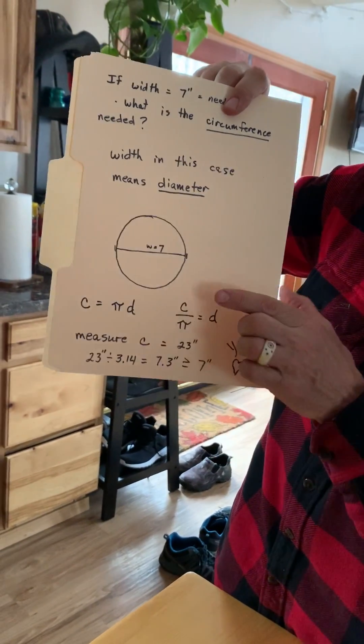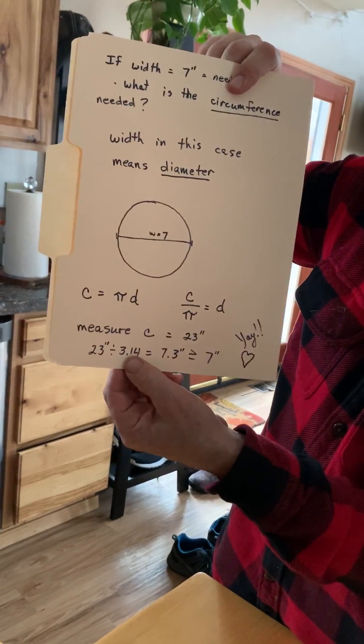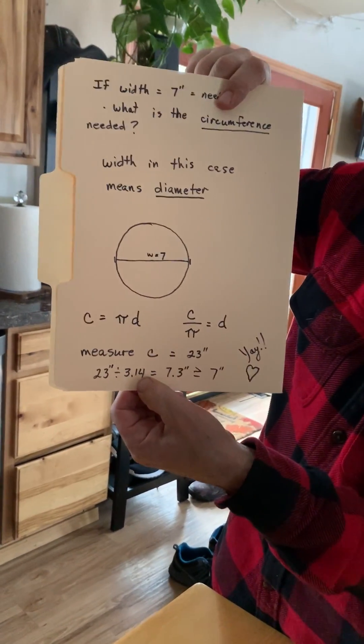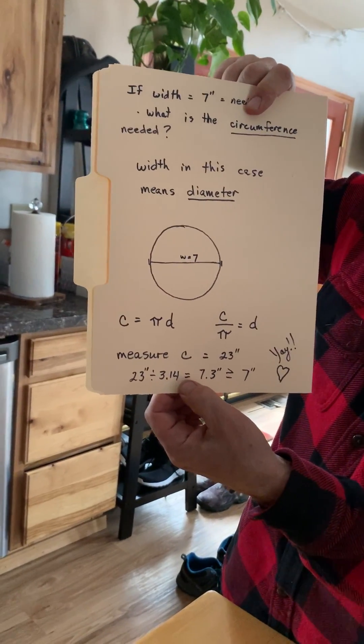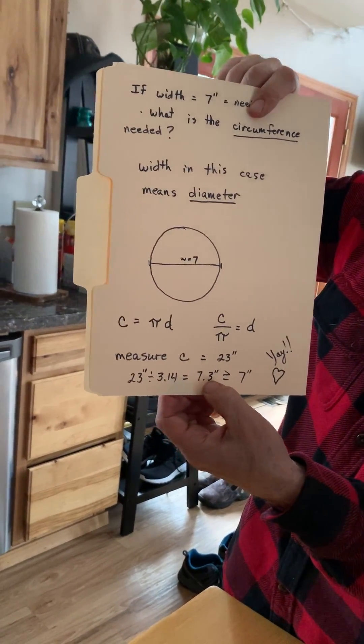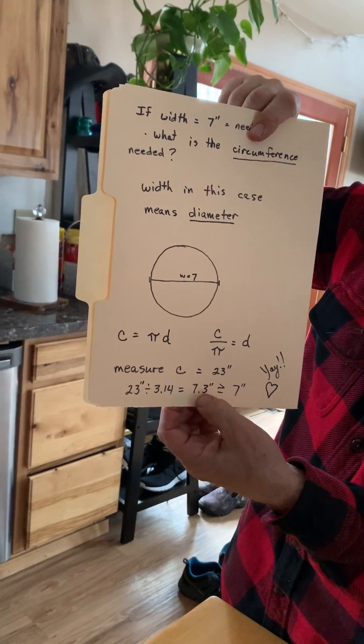And so we take 23 inches divided by pi, 23 inches divided by 3.14. We'll just round that to two digits there. And when I crunched that on the calculator, I ended up with 7.3 something, rounded that to the nearest tenth. That's 7 and 3 tenths inches.